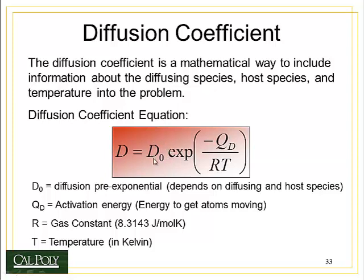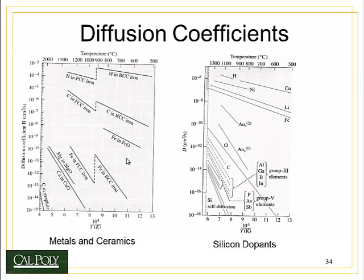There's a D-naught value in the table, and here's the equation that accounts for it. It's called the diffusion coefficient equation, or the Arrhenius equation. The diffusion coefficient D, which is a measure of the speed of diffusion, is equal to D-naught from the table times e to the negative Q_D over RT, where Q_D is the activation energy for diffusion, R is the gas constant, and T is the temperature in Kelvin. So for a given diffusion couple, you can calculate how fast diffusion occurs at a given temperature using the table data and this equation.